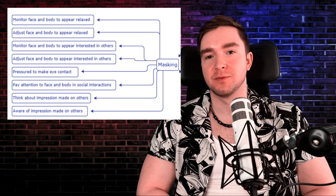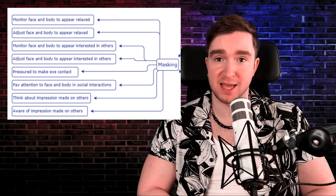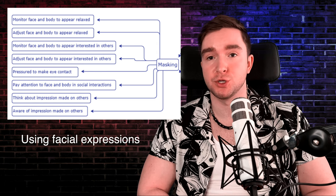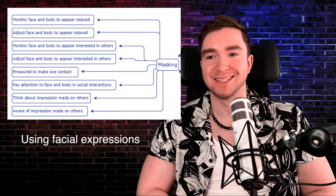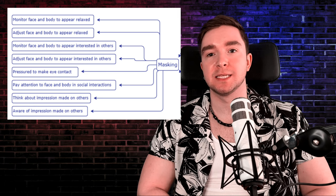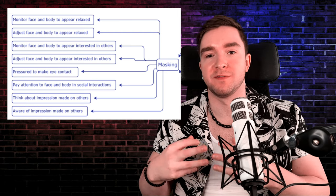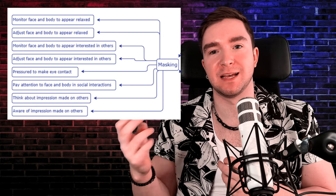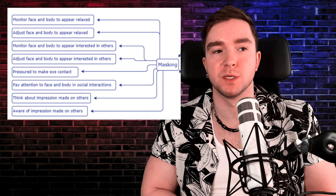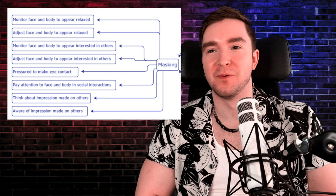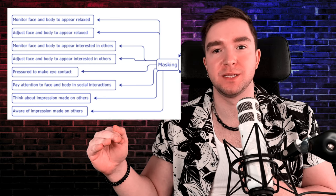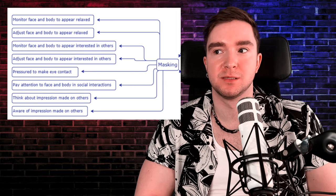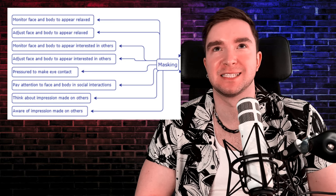There's another aspect of masking which is flat affect. Similar to vocal tonality, it's something that autistic people don't generally tend to display as much as neurotypicals. Basically, we don't necessarily express how we feel on our face. For example, if we are feeling really sad but have a flat affect, our face just looks normal when we're speaking about something really horrific, or we might have a flat, monotone voice when talking about something quite upsetting.